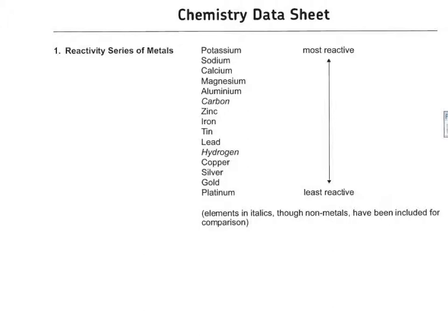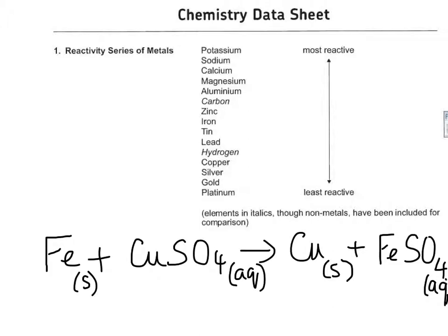You must have learned about displacement reactions — a more reactive element takes the place of a less reactive one. For example, iron is above copper in the reactivity series, meaning iron is more reactive than copper. If you add iron powder to an aqueous solution of copper sulfate, the copper is displaced by the iron — iron takes the place of copper, and copper is kicked out of the compound.